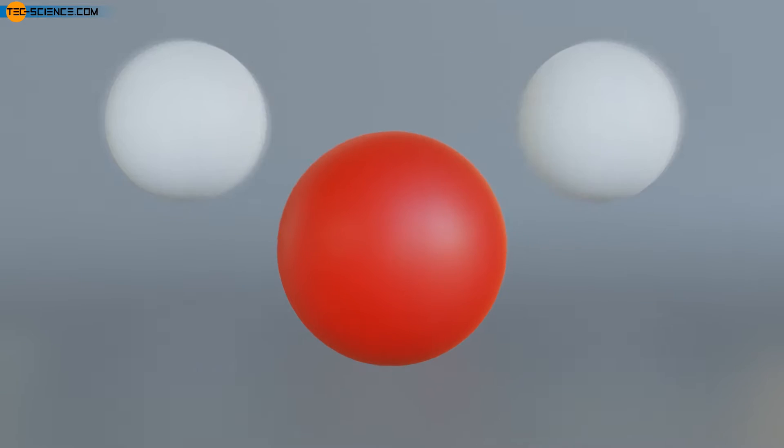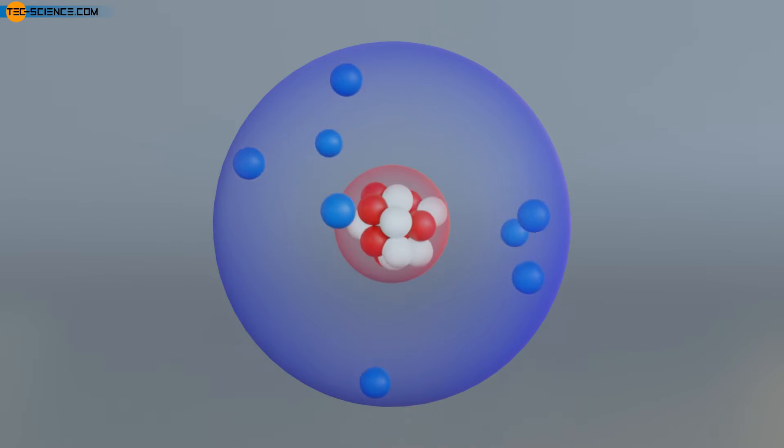According to Rutherford's atomic model, atoms consist of a positively charged atomic nucleus and a negatively charged electron shell. The nucleus contains positively charged protons. These protons are the reason for the positive charge of the atomic nucleus.